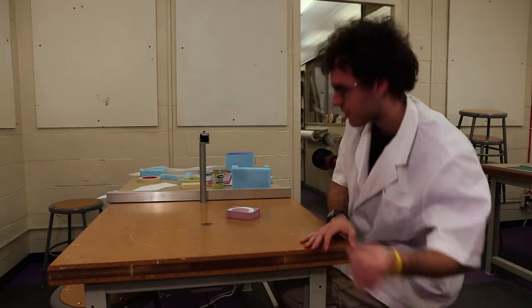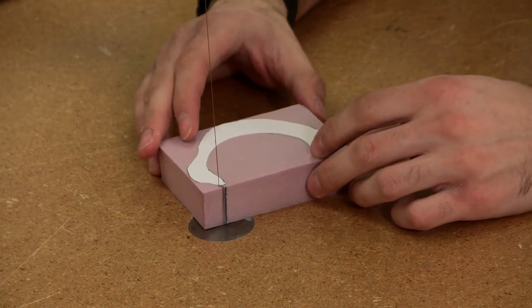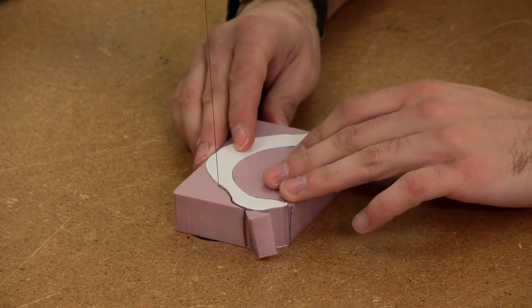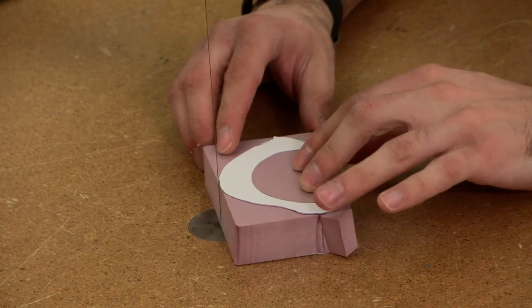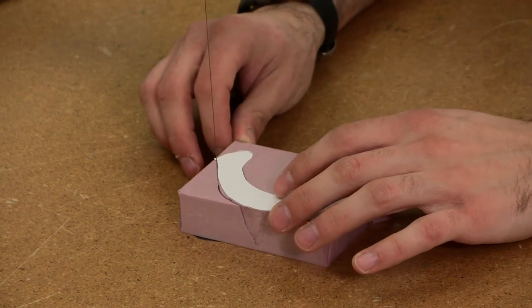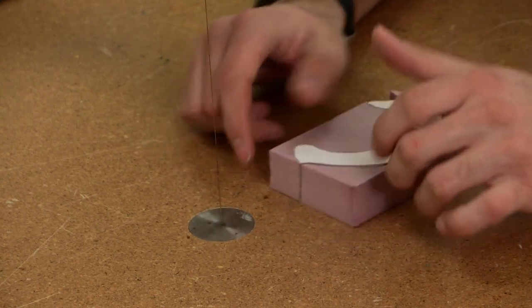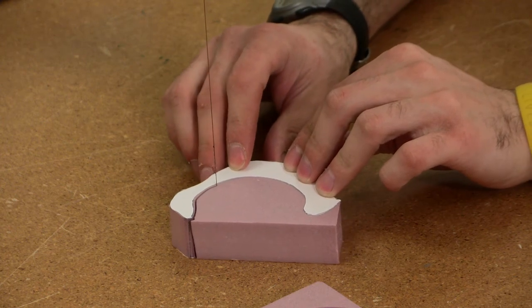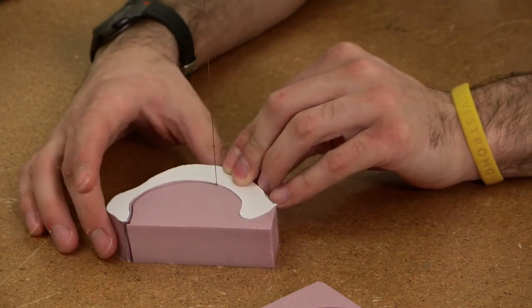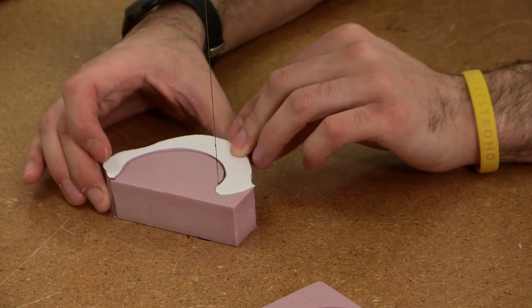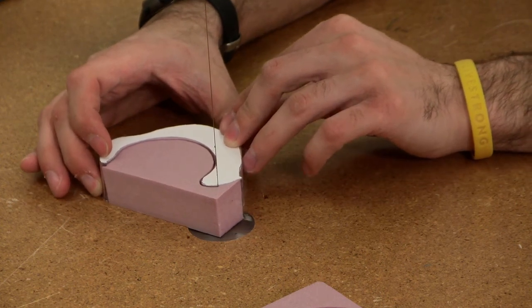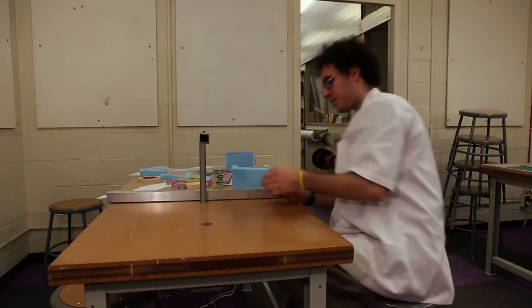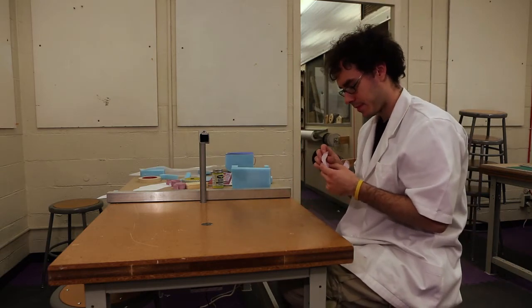So we're going to put the hot wire on and go ahead and just trace these edges. Now I'm trying not to stay in one spot for too long. This pink foam kind of cuts relatively fast, so we're just sliding along the edge. All right, and now the inside edge. Okay, excellent. Okay, there's our little sneaky. Get these patterns out of the way.